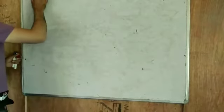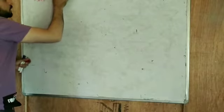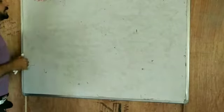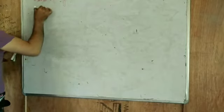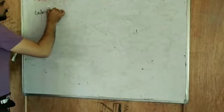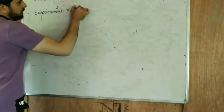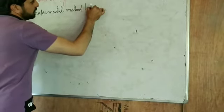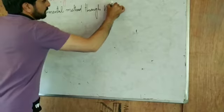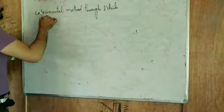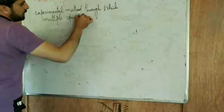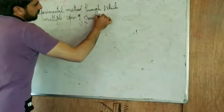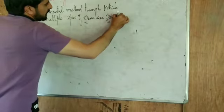Today we are discussing gene cloning, also called genetic engineering. Gene cloning is an experimental method through which many copies — multiple copies — of a gene are generated. That means we can generate multiple copies of a gene by the help of a process known as gene cloning.